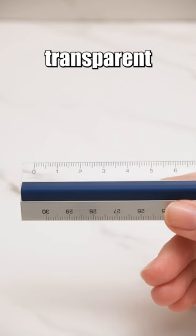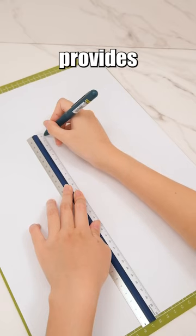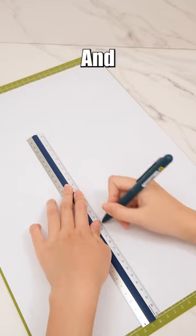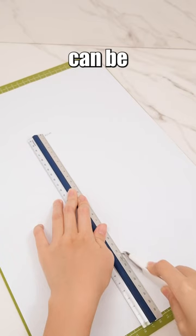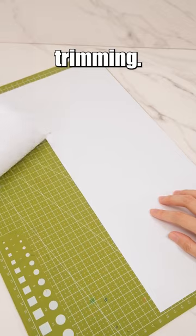These two rulers consist of a transparent acrylic ruler, which provides clear visibility and easy lining, and the aluminum ruler can be used with cutting tools for precise trimming.